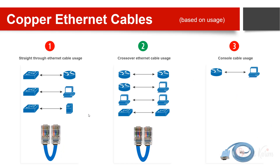Looking at all three types together: straight-through cables are used between different devices. Crossover cables look the same externally but have some pins swapped inside, and they are used when devices are similar. The confusion point is that a router and a computer are considered similar devices. So switch-to-switch, computer-to-computer, router-to-router, server-to-server, and router-to-computer are all crossover cable connections.